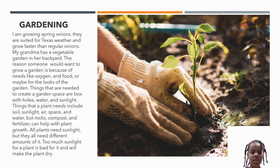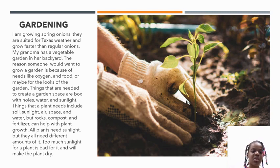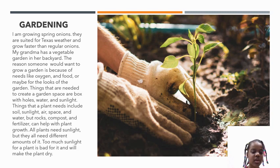Things that a plant needs include soil, sunlight, air, space, and water. But rocks, compost, and fertilizer can help with plant growth. All plants need sunlight, but they all need different amounts of it. Too much sunlight is bad for a plant and will make the plant dry.